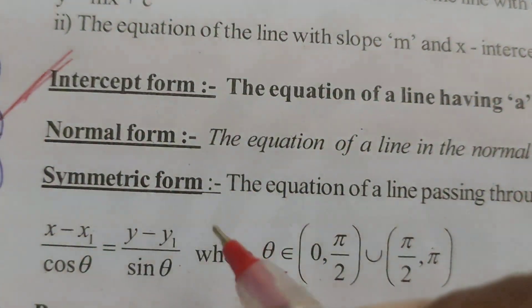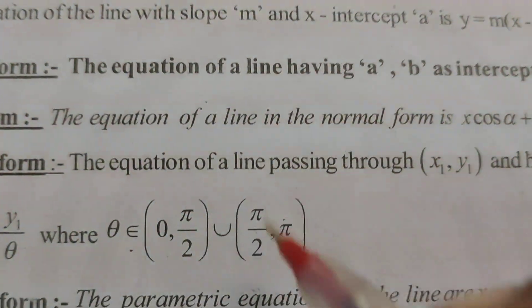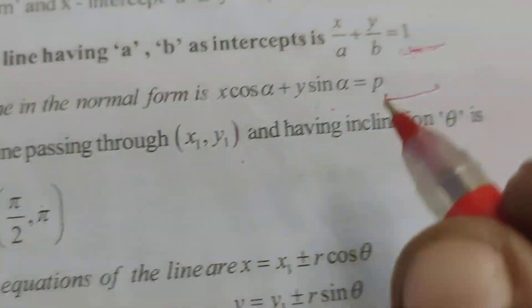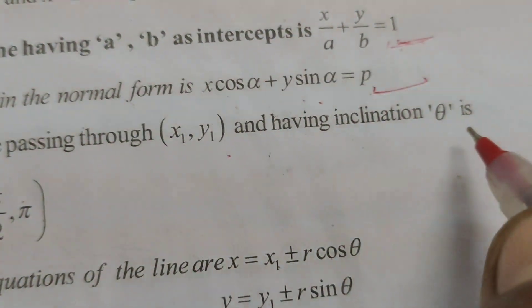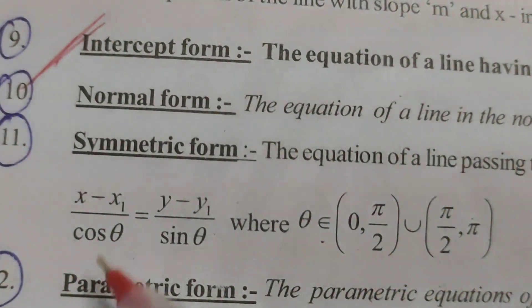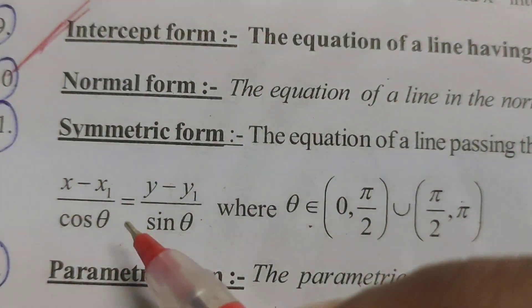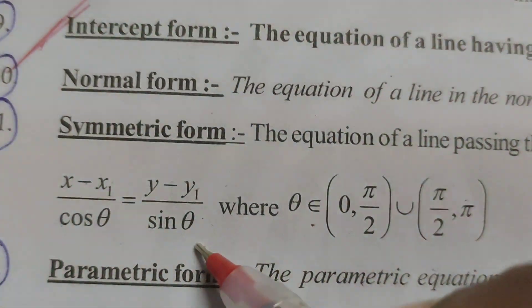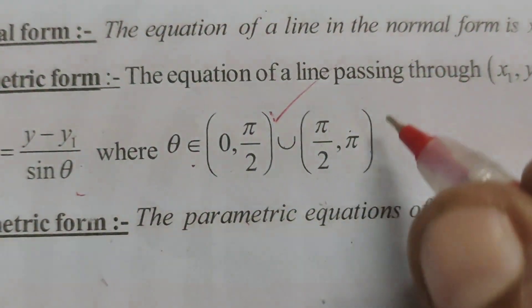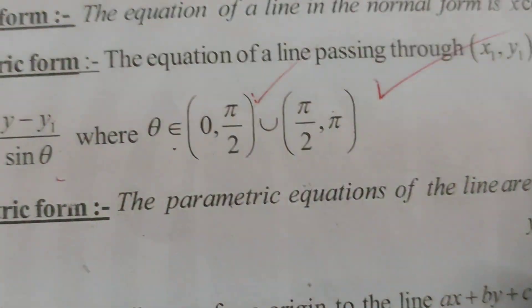Next, what is the symmetric form? The equation of a line passing through the point X1, Y1 and having inclination theta is formula X minus X1 by cos theta equals to Y minus Y1 by sin theta, where theta belongs to 0 comma pi by 2 union pi by 2 comma pi.